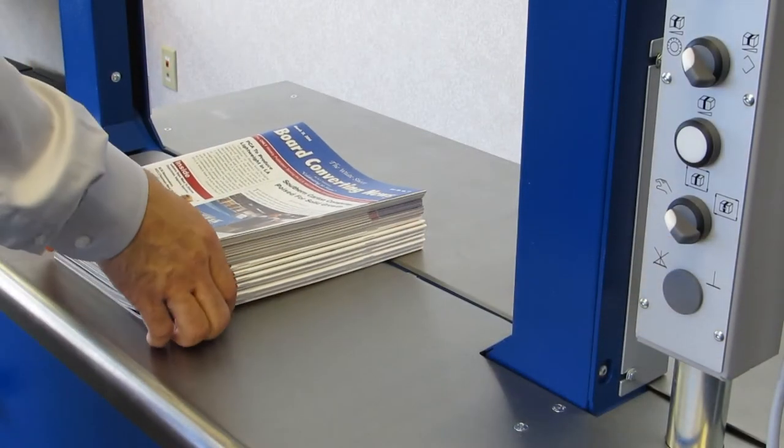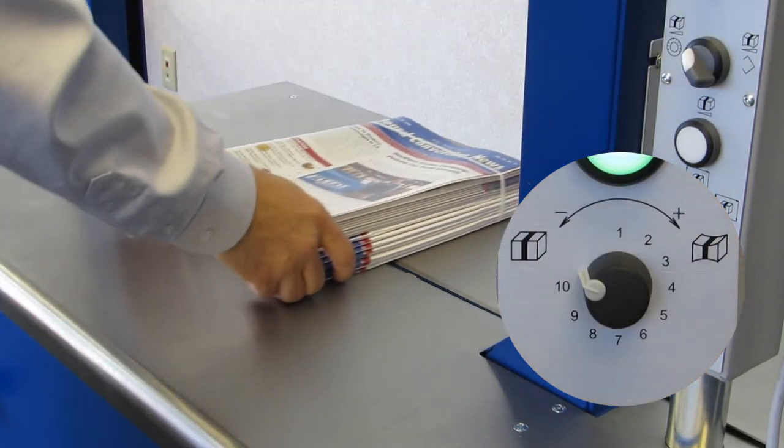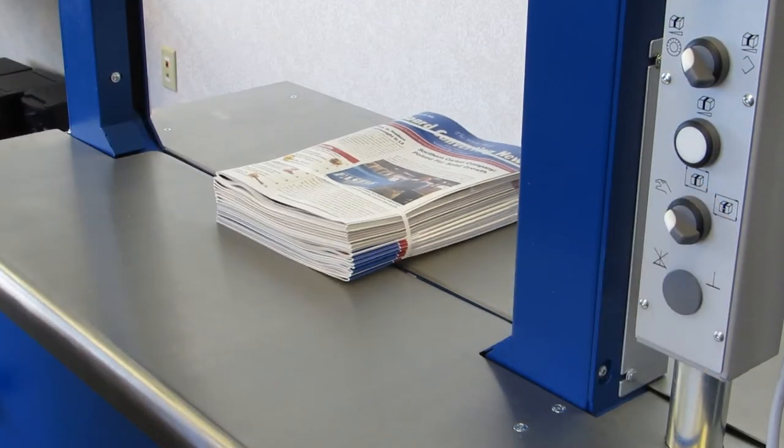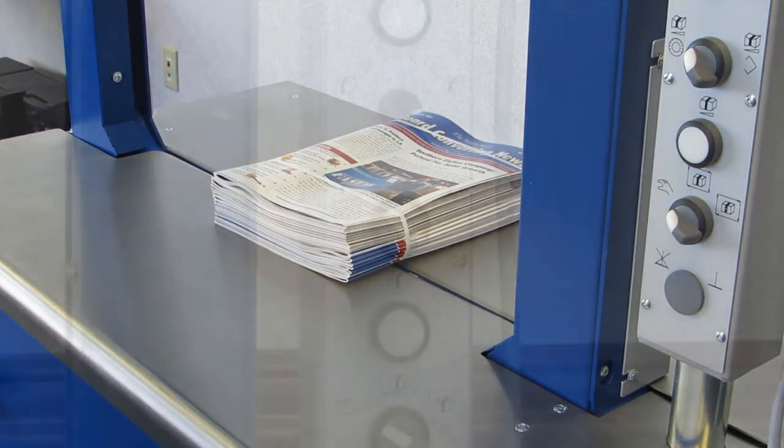In the adjustable tension mode, the tension dial can be turned anywhere from a setting of 1 for low tension, all the way up to a setting of 10 for maximum tension as needed. This mode is beneficial when strapping a wide variety of product.